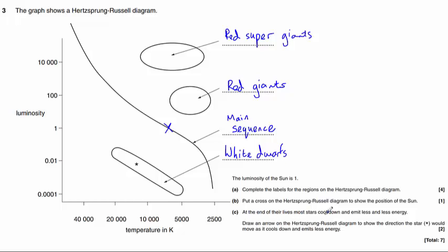Part C. At the end of their lives, most stars cool down and emit less and less energy. Draw an arrow on the Hertzsprung-Russell diagram to show the direction the star, marked by an asterisk, would move as it cools down and emits less energy.